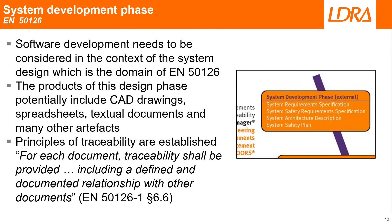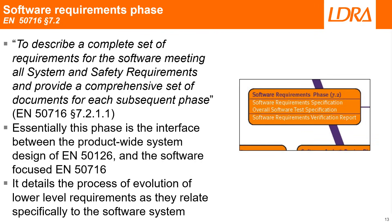Software development needs to be considered in the context of the system design, which is the domain of EN50126. The products of this design phase potentially include CAD drawings, spreadsheets, textual documents, and many other artefacts. The software requirements phase requires a description of a complete set of requirements for the software meeting all system and safety requirements, and provides a comprehensive set of documents for each subsequent phase. Essentially, this phase is the interface between the product-wide system design of EN50126 and the software focus of EN50716, detailing a process of evolution of lower-level requirements as it relates specifically to the software system.